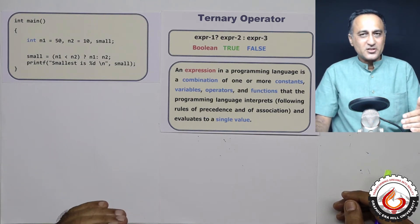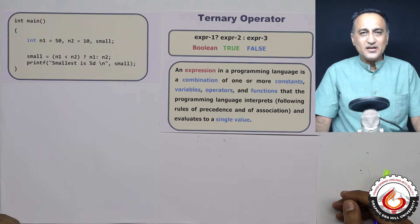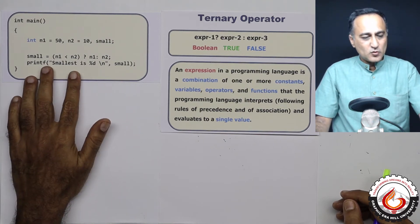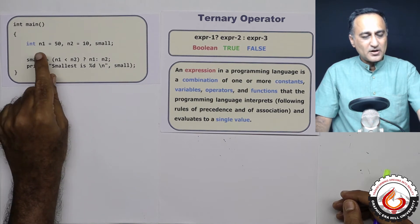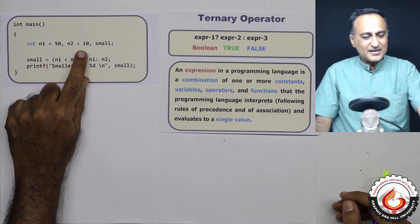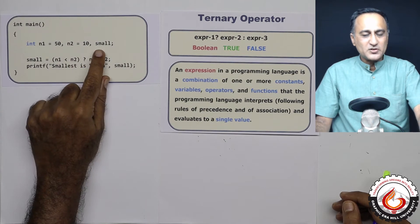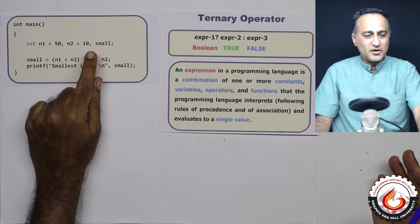Before we get into a theoretical discussion, the easiest way to understand the working of a ternary operator is through an example. So what I have done is I have written a piece of code here, n1 is 50, n2 is 10, and the third variable called small, which is not given any initial value.